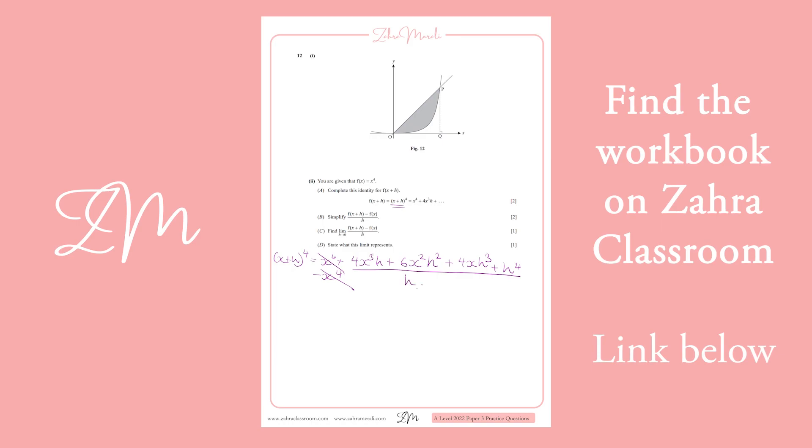So, there's a h on the top and a h on the bottom. So, that goes, that goes, that becomes h squared, and that becomes cubed, leaving me with 4x cubed plus 6x squared h plus 4x h squared plus h cubed.